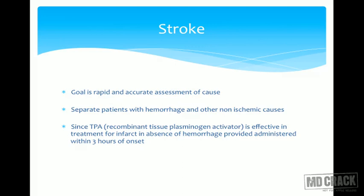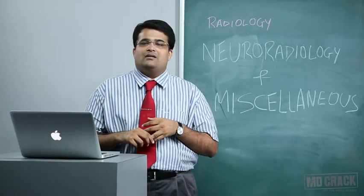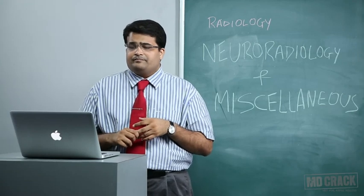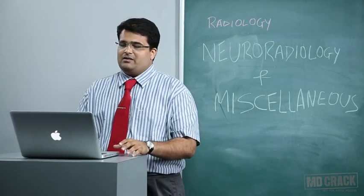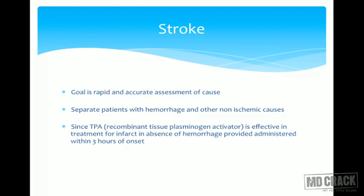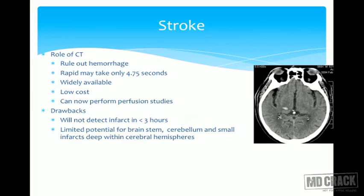Stroke is one of the most common indications for neuroimaging. The goal is rapid and accurate assessment of the cause — whether it is an embolic episode, an aneurysm, or a tumor. It is important to separate patients with hemorrhage from other non-ischemic causes, since tPA (recombinant tissue plasminogen activator) is effective only in the absence of hemorrhage if administered within three hours of onset.